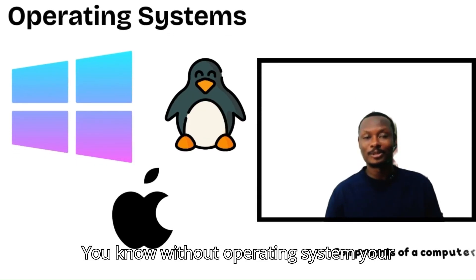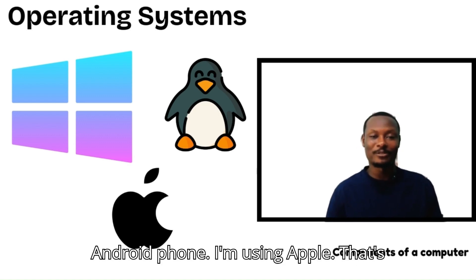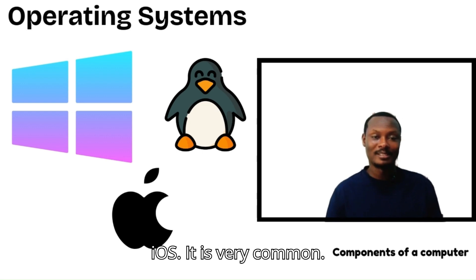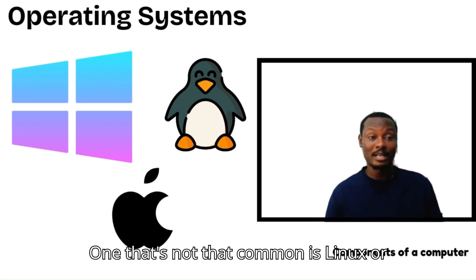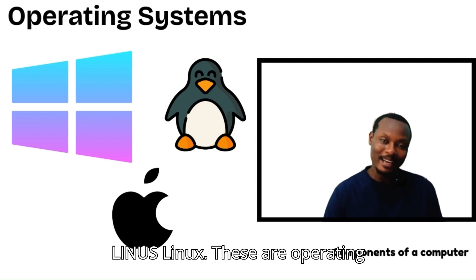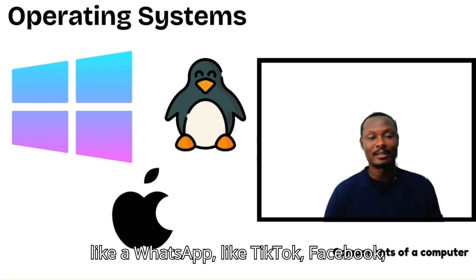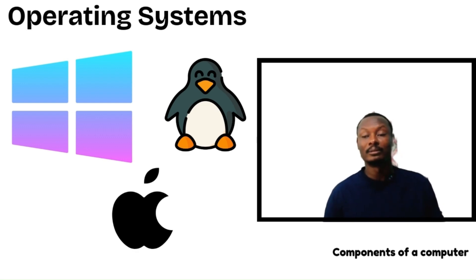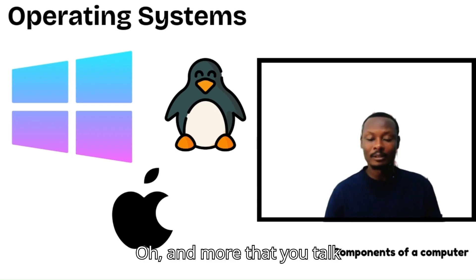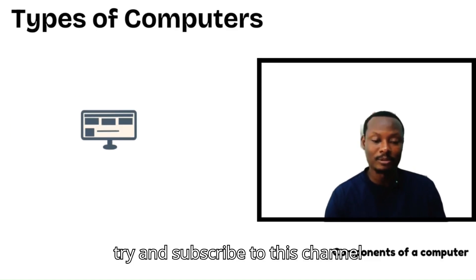Without an operating system your device cannot function. Examples include Android, iOS (Apple), and Linux. These are operating systems. We also have applications — apps like WhatsApp, TikTok, and Facebook. These are all things we will talk more about in understanding the types of computers.